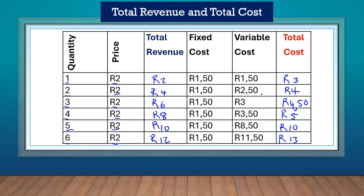So when we add our fixed cost to our variable cost, we get our total cost. Let me talk about the fixed cost a little bit. Fixed costs do not change with output. For one item it's one fifty, for two items the fixed cost is still one fifty — it stays the same. That is the definition of fixed cost: it's the cost that stays the same irrespective of output.